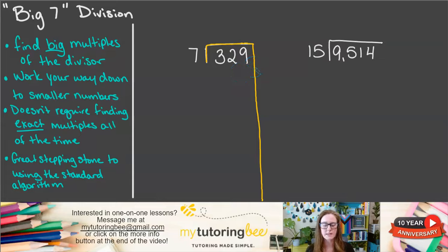One of the reasons that this method works so well is because you don't have to be so exact with the multiples of 7. We're going to start off with some big groups of 7 that we're going to take away, and we're going to get this number down to a smaller, more manageable number, and see how many times 7 can go into 329.